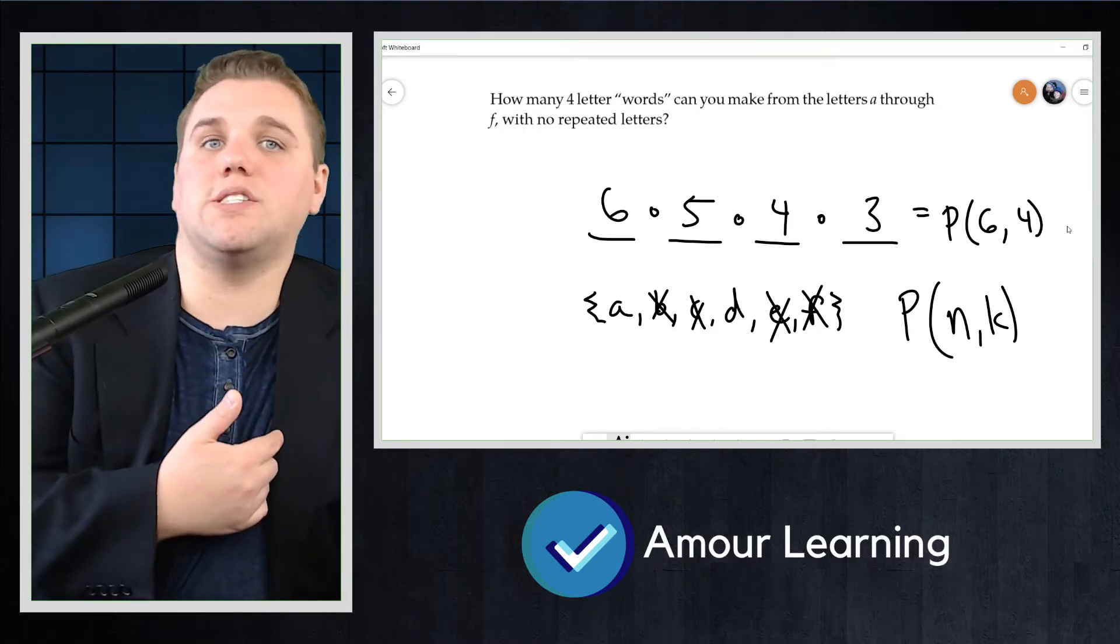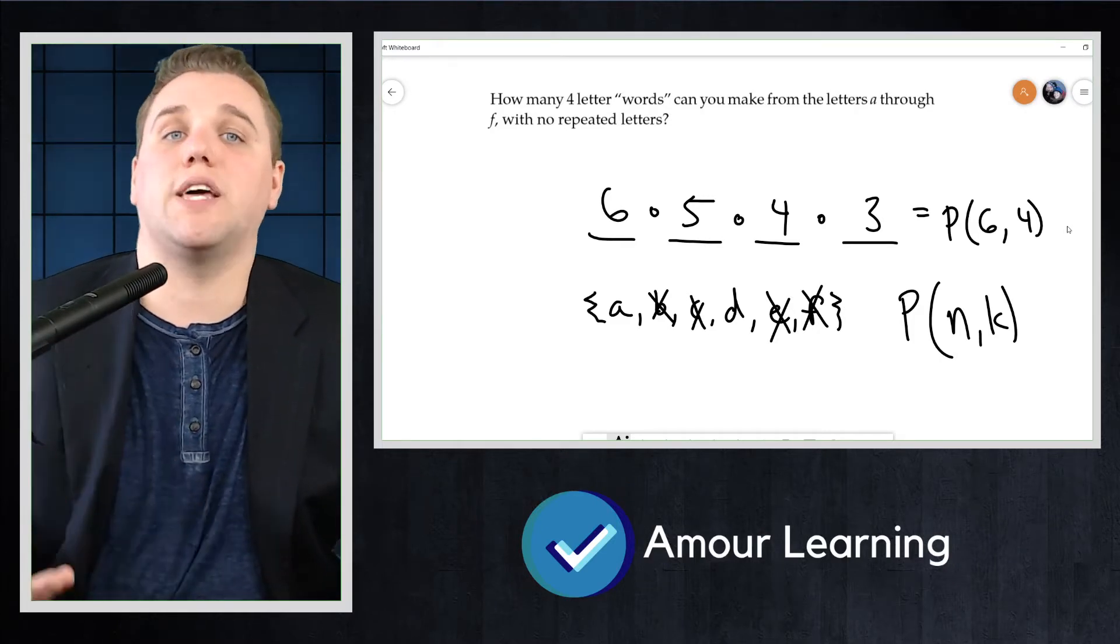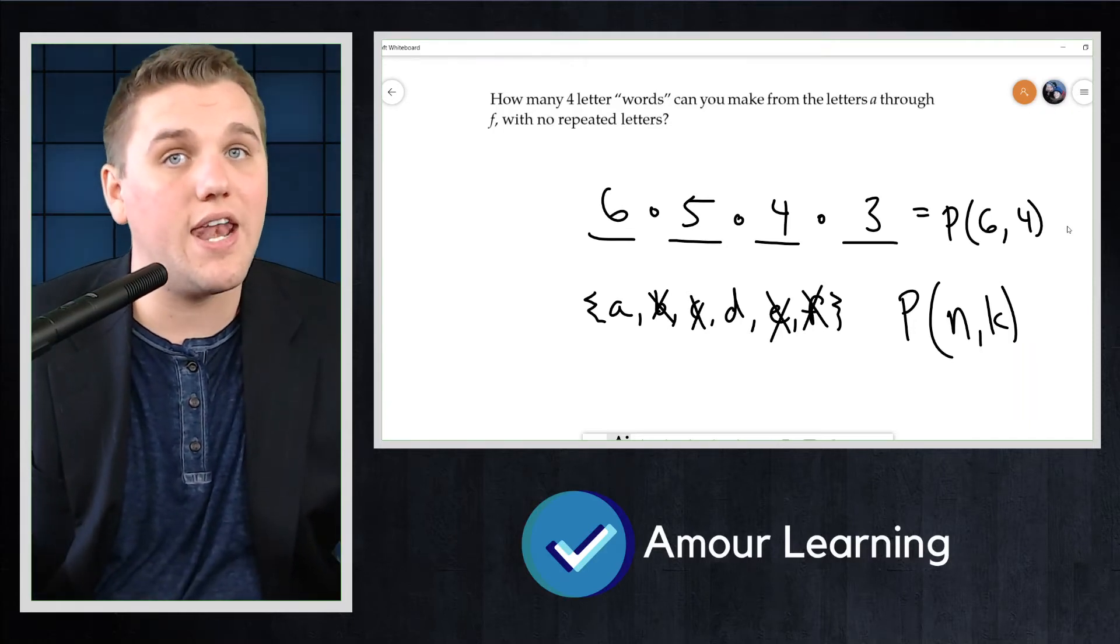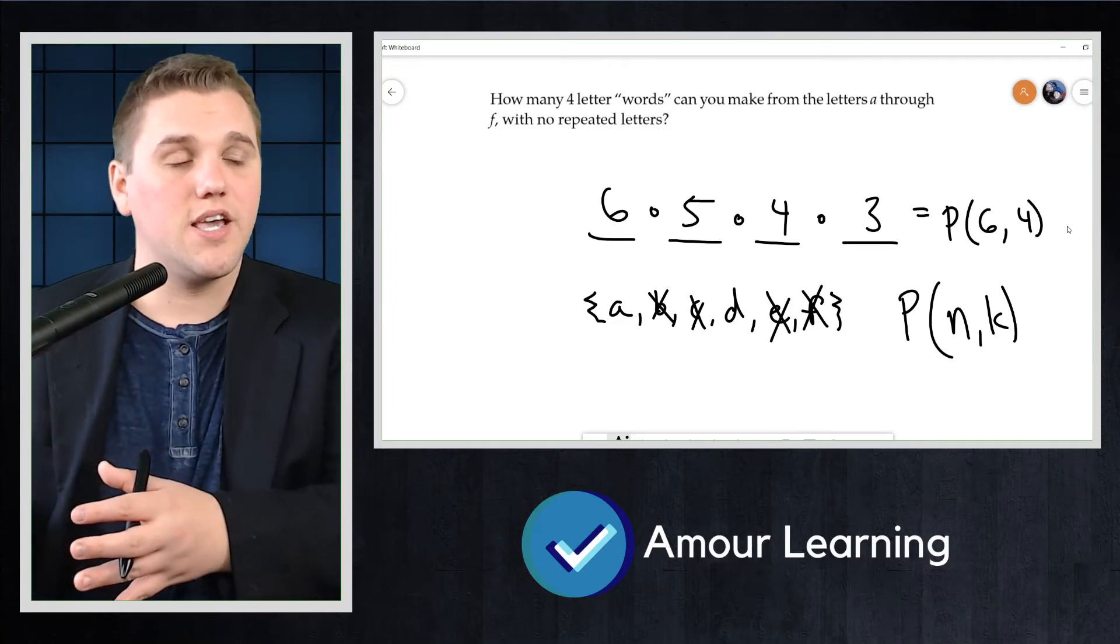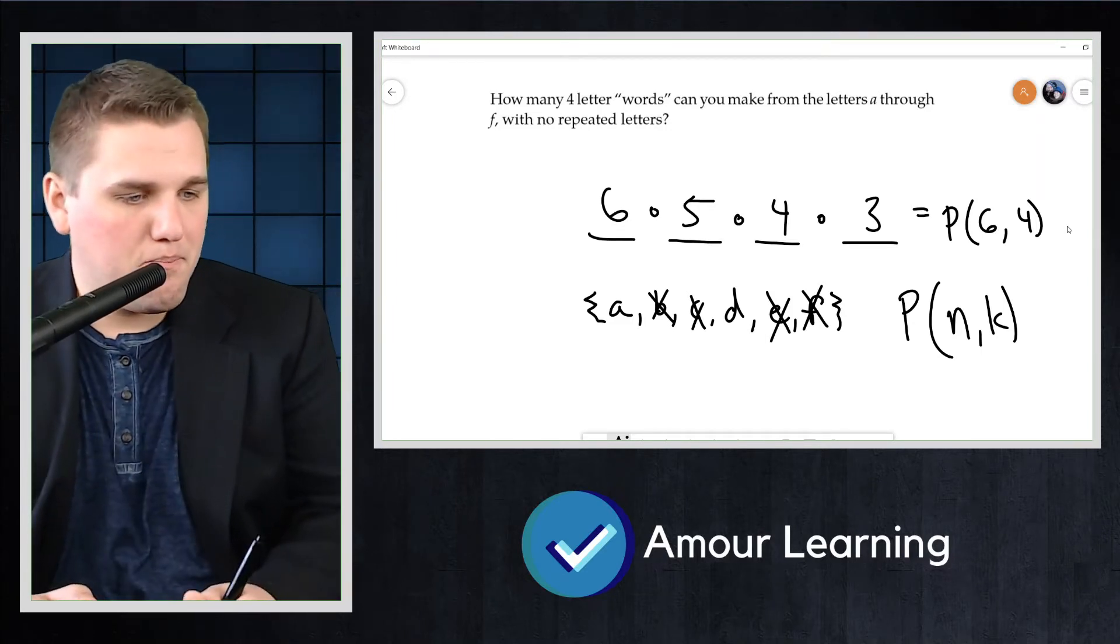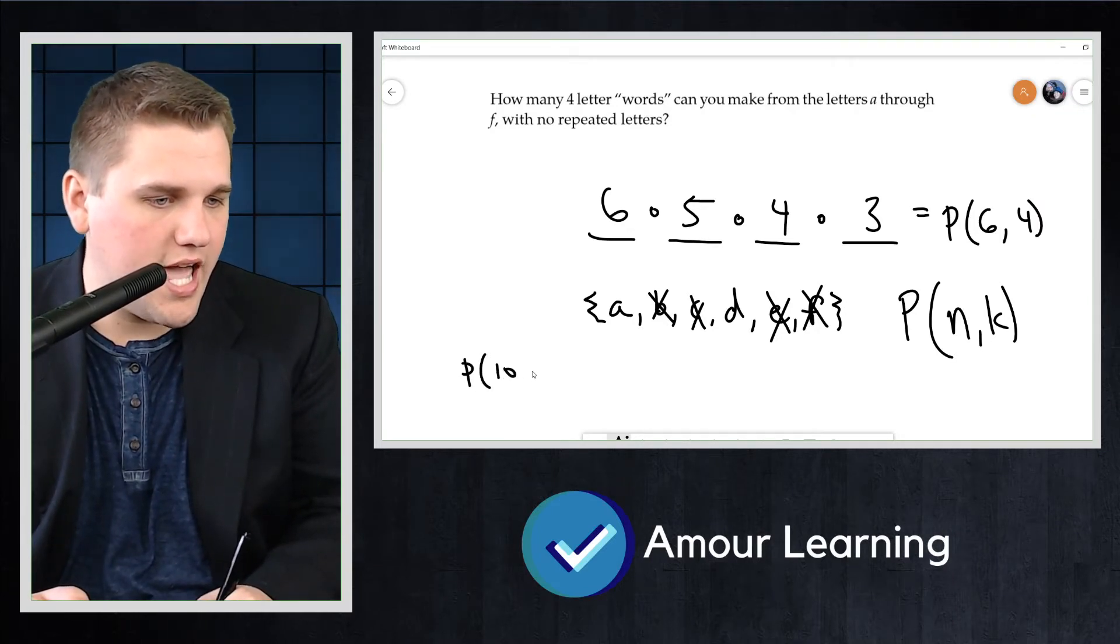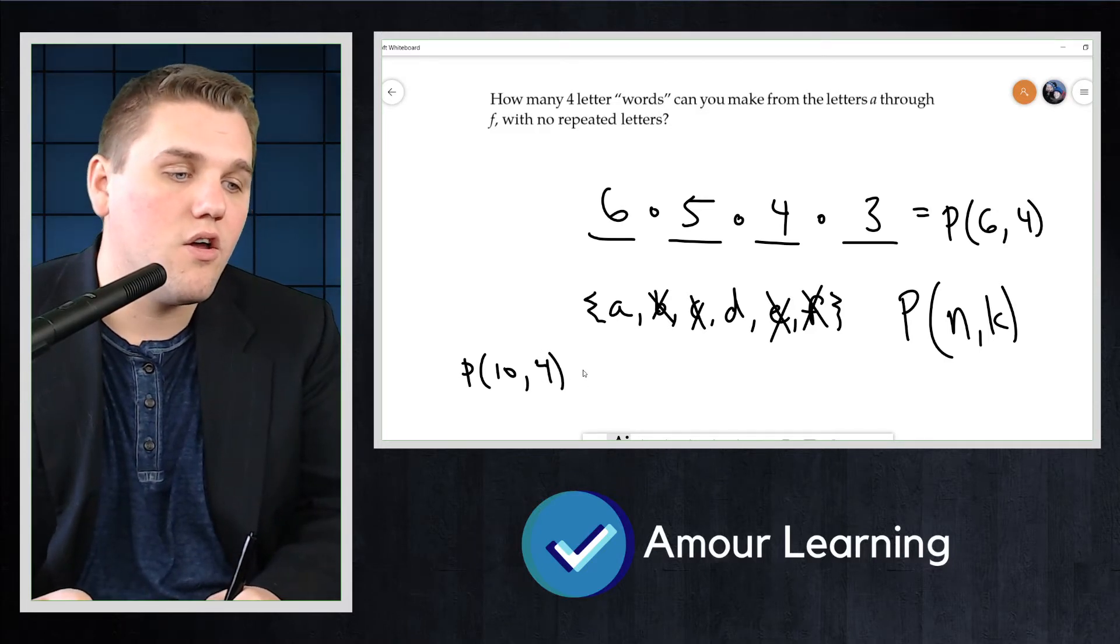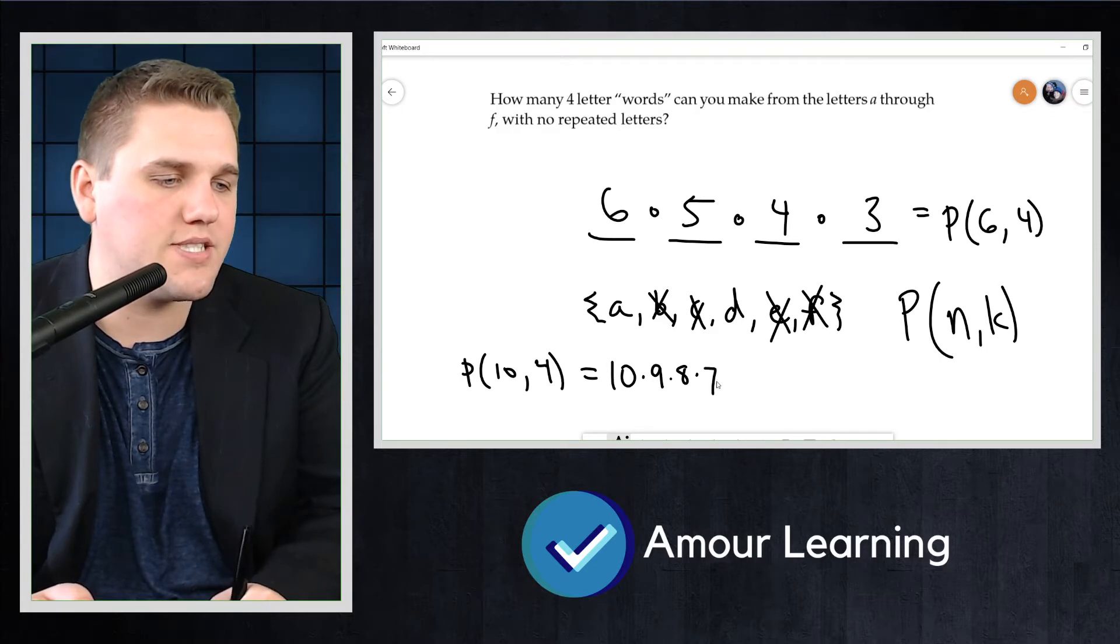From this example, we see that to compute P(N,K), we must apply the multiplicative principle to K numbers, starting with N and counting backwards. So we start with six and we count backwards. For example, P(10,4) would be 10 times 9 times 8 times 7, stop.